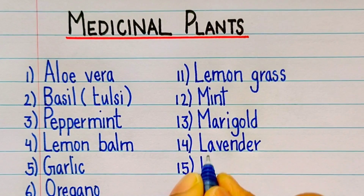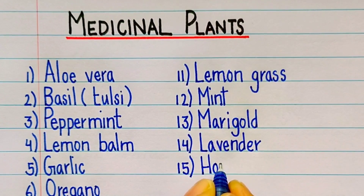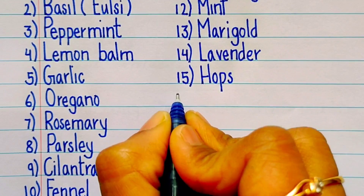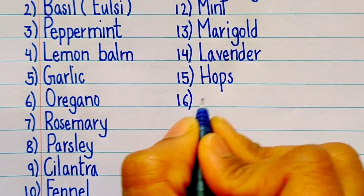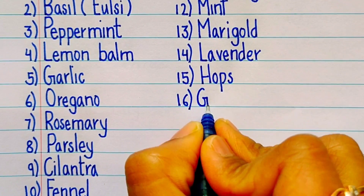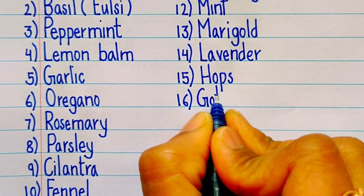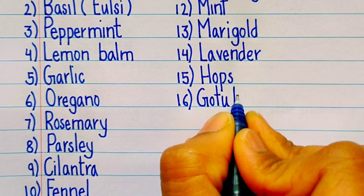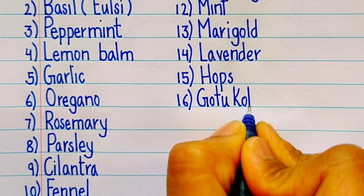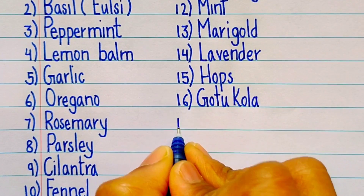Fifteenth one is hops, H-O-P-S. Sixteenth one is gotu-kola, G-O-T-U-K-O-L-A.